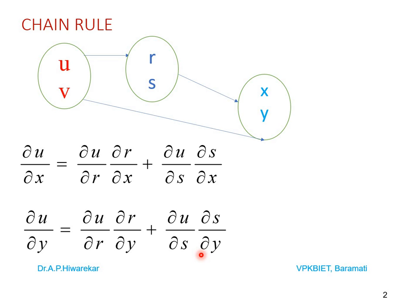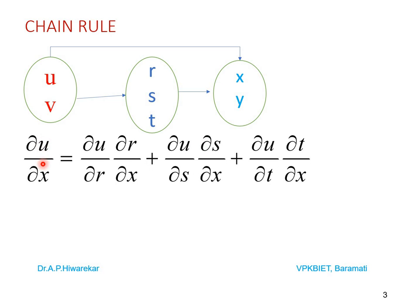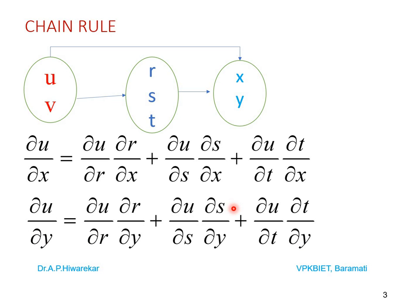Similarly, ∂u/∂y = (∂u/∂r)(∂r/∂y) + (∂u/∂s)(∂s/∂y). And you can construct a similar formula for ∂v/∂x as well as ∂v/∂y. We then consider another situation where u and v are functions of r, s, and t, and r, s, t are functions of x and y. In this case the chain rule becomes: ∂u/∂x = (∂u/∂r)(∂r/∂x) + (∂u/∂s)(∂s/∂x) + (∂u/∂t)(∂t/∂x).